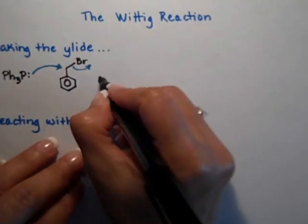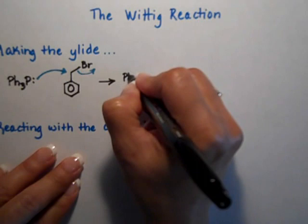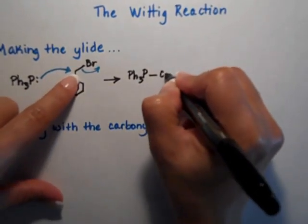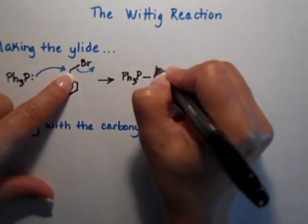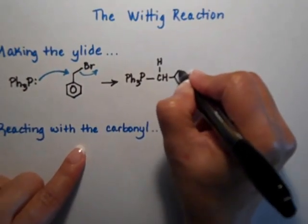And the product of this right here, it's not our ylide yet. So now we have the triphenylphosphine attached to the benzylic carbon, which is the CH2. And I'm going to stick out one of the hydrogens up. And we have a phenyl ring attached to it.